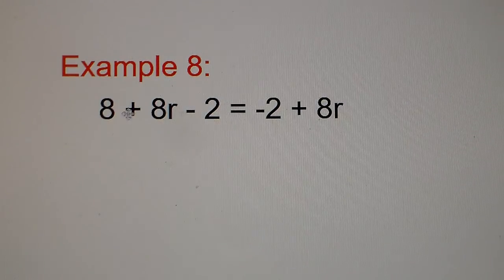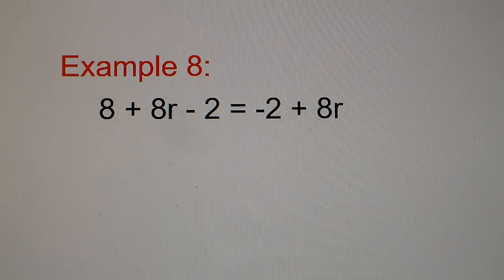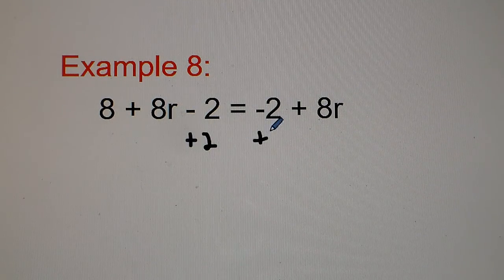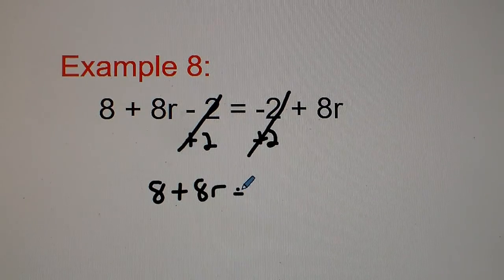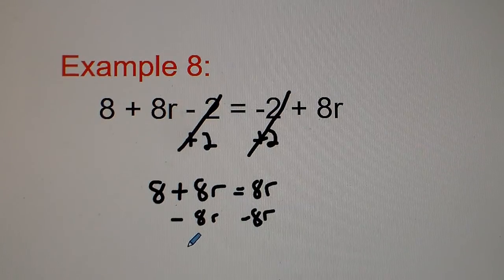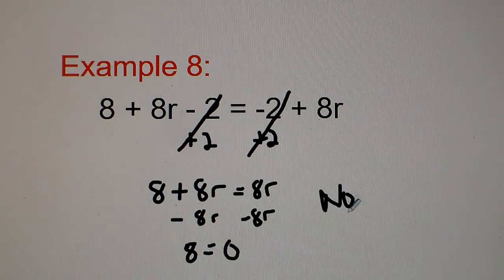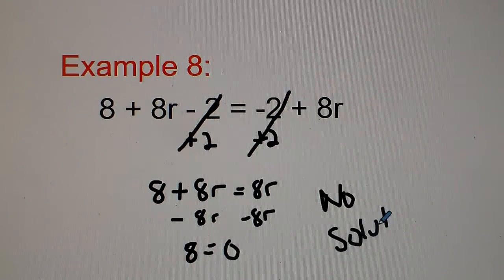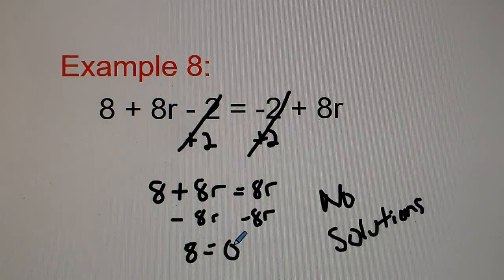Example number 8: I have 8 plus 8r minus 2. I'm going to first add 2 to both sides, which eliminates those terms, giving us 8 plus 8r equals 8r. I then subtract 8r from both sides and we get 8 equals 0. Now does 8 equal 0? No, that doesn't work — so in this case this is no solution.